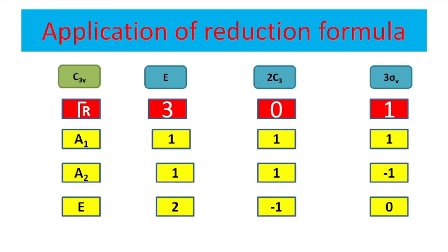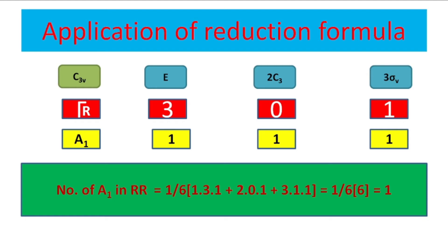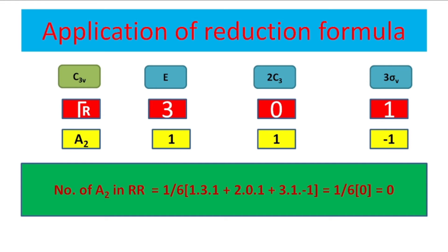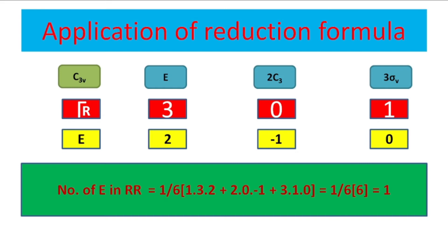Using the reduction formula for C3v, the order h is 6: identity has one member, the C3 class has two members, and the vertical plane class has three members. For A1: 1 upon 6 into (1 into 3 into 1) plus (2 into 0 into 1) plus (3 into 1 into 1) — summation is 6, so 6 divided by 6 equals 1. A1 occurs once. For A2: 1 upon 6 into (1 into 3 into 1) plus (2 into 0 into 1) plus (3 into 1 into minus 1) — summation is 0, so A2 does not occur.